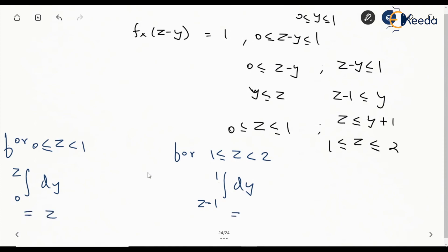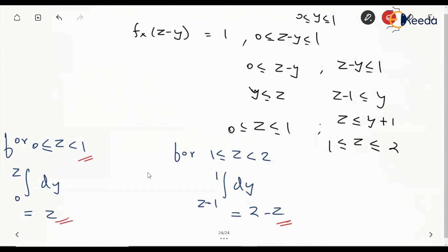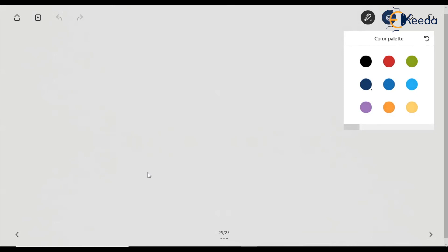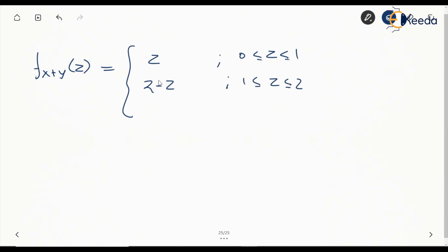Evaluating these integrals: for z between 0 and 1 the result is z, and for z between 1 and 2 it is 1 minus (z minus 1) which equals 2 minus z. Therefore the density function f(z) of x plus y is: z if z is between 0 and 1, 2 minus z if z is between 1 and 2, and 0 otherwise.